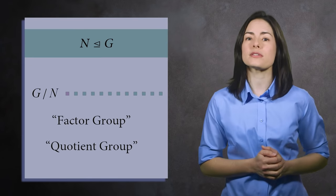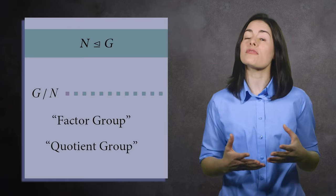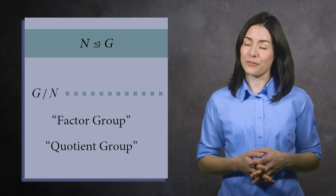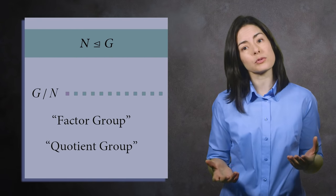The factor group is a completely separate group from N and G. The name factor group conjures up images of factoring numbers. This was deliberate.